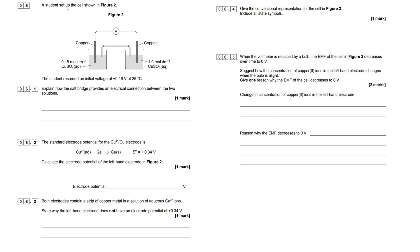So let's begin then. A student set up a cell shown in figure 2. We have this typical cell here with our copper, copper 2 plus half cell on this side, and another identical, or almost identical, copper, copper 2 plus cell, and we've measured an initial voltage of 0.6 volts at 25 degrees Celsius.